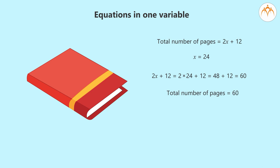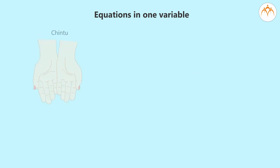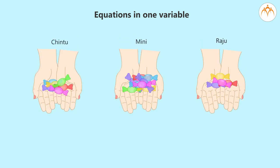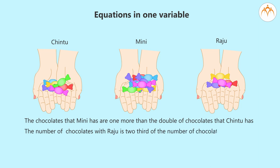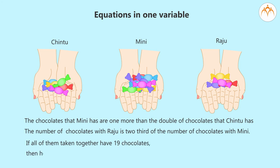Let us take another example. Chintu, Mini and Raju are having some chocolates. The chocolates that Mini has are one more than double the chocolates that Chintu has. The number of chocolates with Raju is two-thirds of the number of chocolates with Mini. If all of them together have 19 chocolates, how will we find out how many each one has?